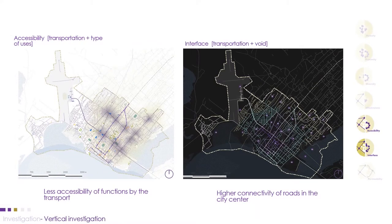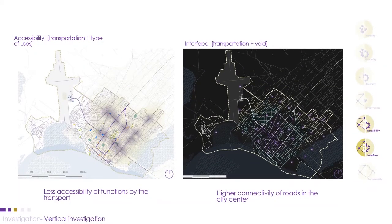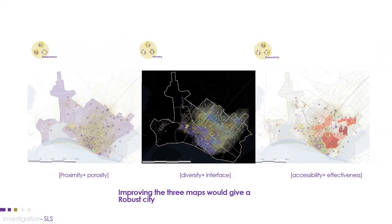The accessibility map shows accessibility from public transport, which is notably high on road junctions. The interface map is a superimposition between transportation and void, helping us understand connectivity between existing roads. The city center has a better interface compared to the periphery. Finally, we have the second-level superimposition: compactness, complexity, and connectivity — obtained by overlaying two maps from vertical investigation. Improving these three would give a robust city.